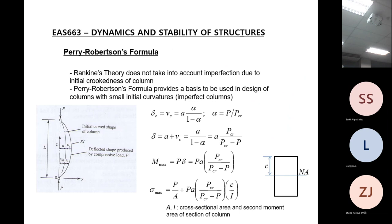So today we're going to start off with the formula we can use to predict what load you can allow to apply on an imperfect column. The Perry-Robertson formula has been adopted in design codes in a slightly different form, but this is the formula being used and it considers imperfections. The detailed derivation is given in the notes I have uploaded.